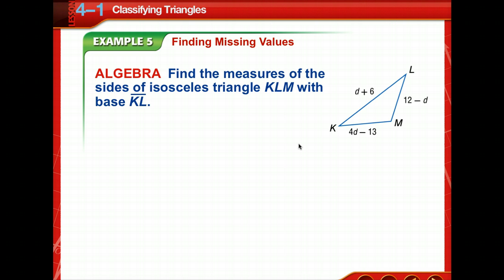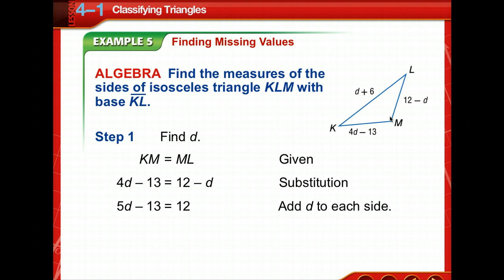You can also use properties of isosceles and equilateral triangles to find missing values. That's what we're going to do in example 5. Find the measures of the sides of isosceles triangle KLM with base KL. Well, if the base is KL, then we know that KM and LM have the same measure. They're the ones that are identical. So, first of all, we're going to set KM and ML equal to each other and simply solve for D. So, we're going to add D to both sides here, and then we're going to add 13 to both sides, and then divide by 5. So, D is equal to 5. You might take a quick note of those measures before you pause the video and do that before you go to the next slide.